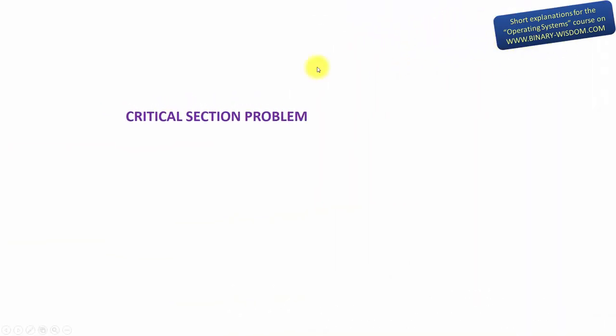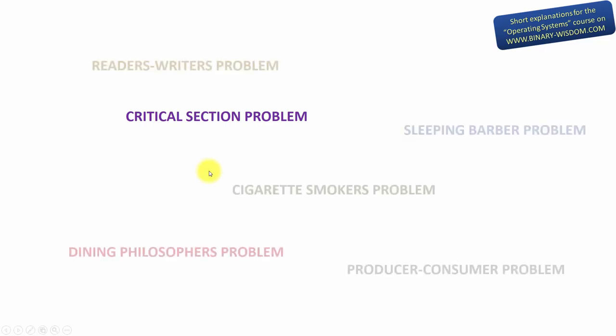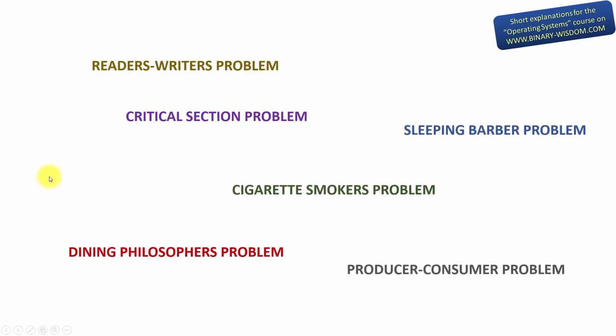So far we have only discussed the critical section problem, but this is only one of many well-known synchronization problems. Other synchronization problems include the dining philosopher's problem, the cigarette smoker's problem, the reader-writer's problem, and the sleeping barber problem. All of these problems are usually discussed in real-life metaphors, but each one describes a parallel programming scenario that requires a special technique to synchronize processes or threads. All of them are just convenient real-life allegories for processes and threads that use shared resources, and programmers use the solutions to these problems when creating programs.